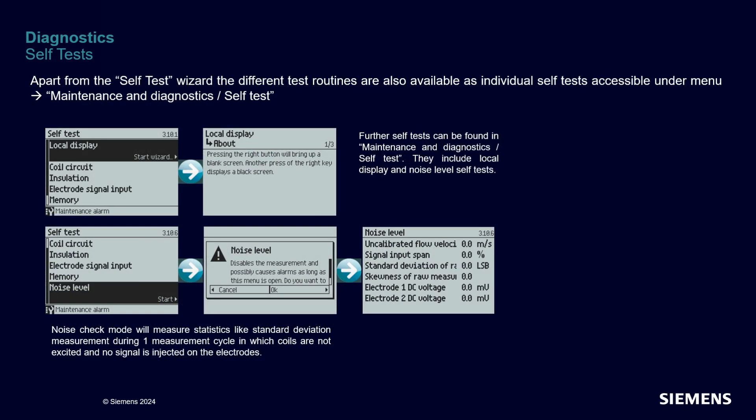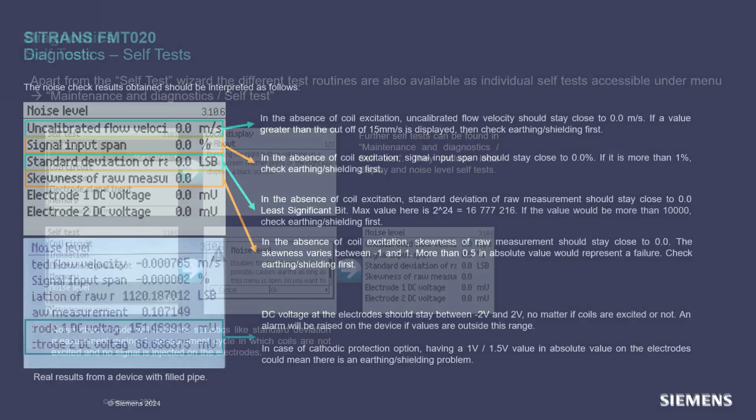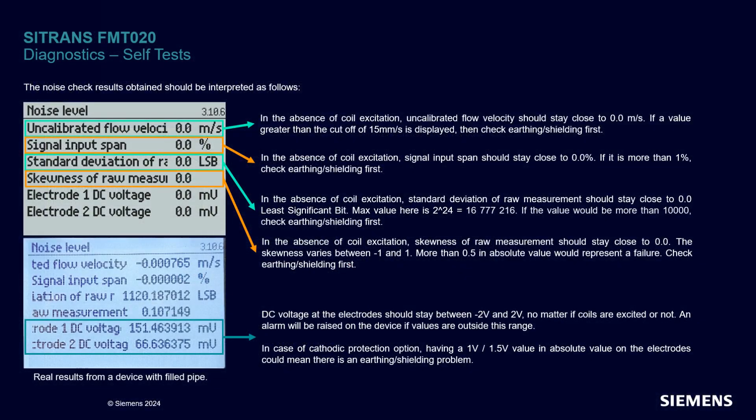You can also review the noise level characteristics to understand if there would be any kind of external interference that could impact your system and affect the measurements. When observing the characteristics of the noise, you can really troubleshoot the installation. It will help an experienced user detect grounding issues or other problems with the coils.